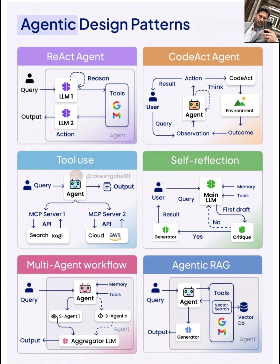Hey everyone, welcome back to the channel. We've got six distinct design patterns here, each with its own approach to how an AI agent interacts with the world and makes decisions. Let's start with the React agent. React stands for Reason plus Act. This pattern emphasizes a tight loop between the agent's reasoning process and its actions.